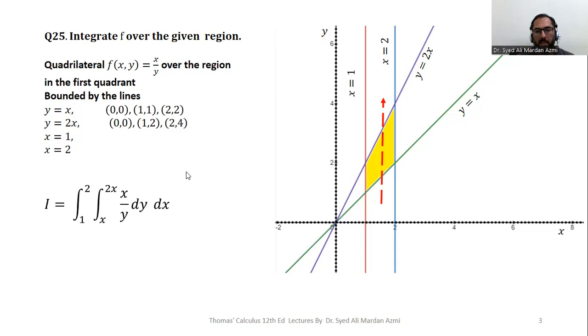For inner variable y, we pass an arrow through our region as you can see by this dotted red arrow. This red arrow enters our region from the boundary y equal to x to 2x. So the limits of y are x to 2x.